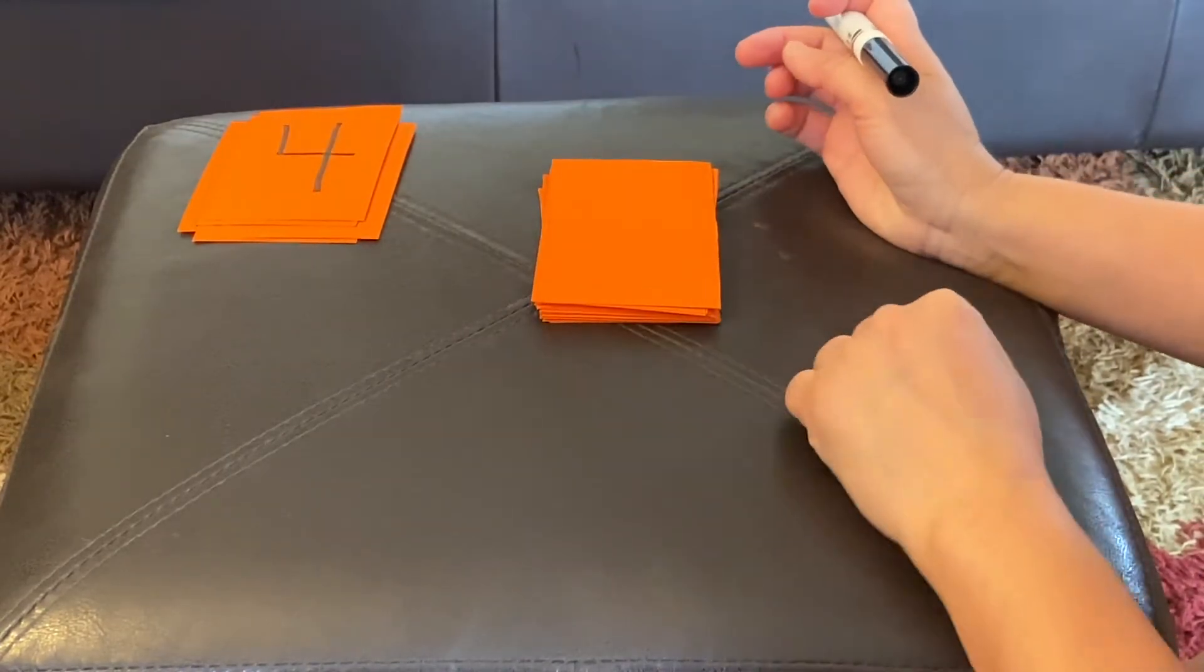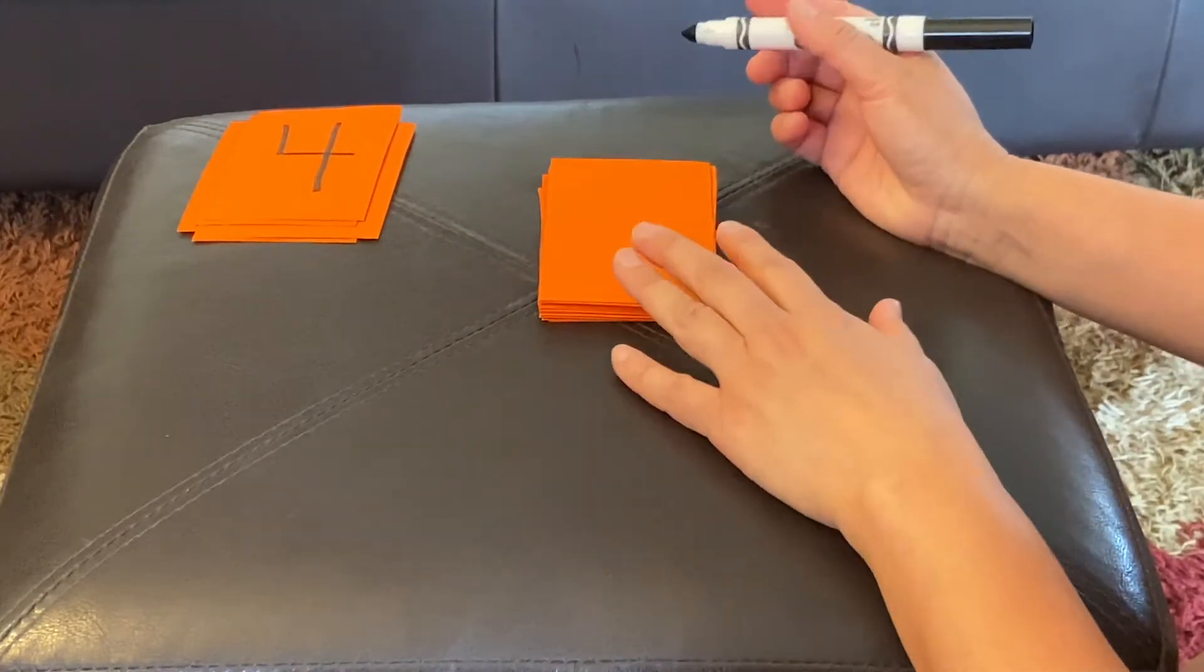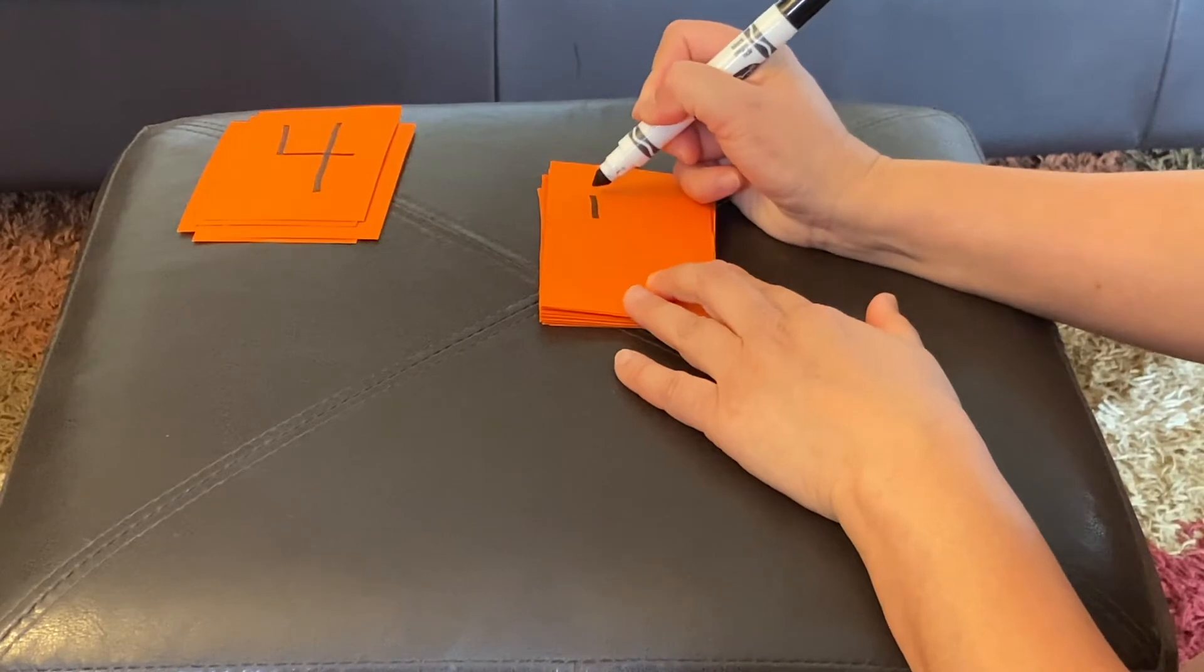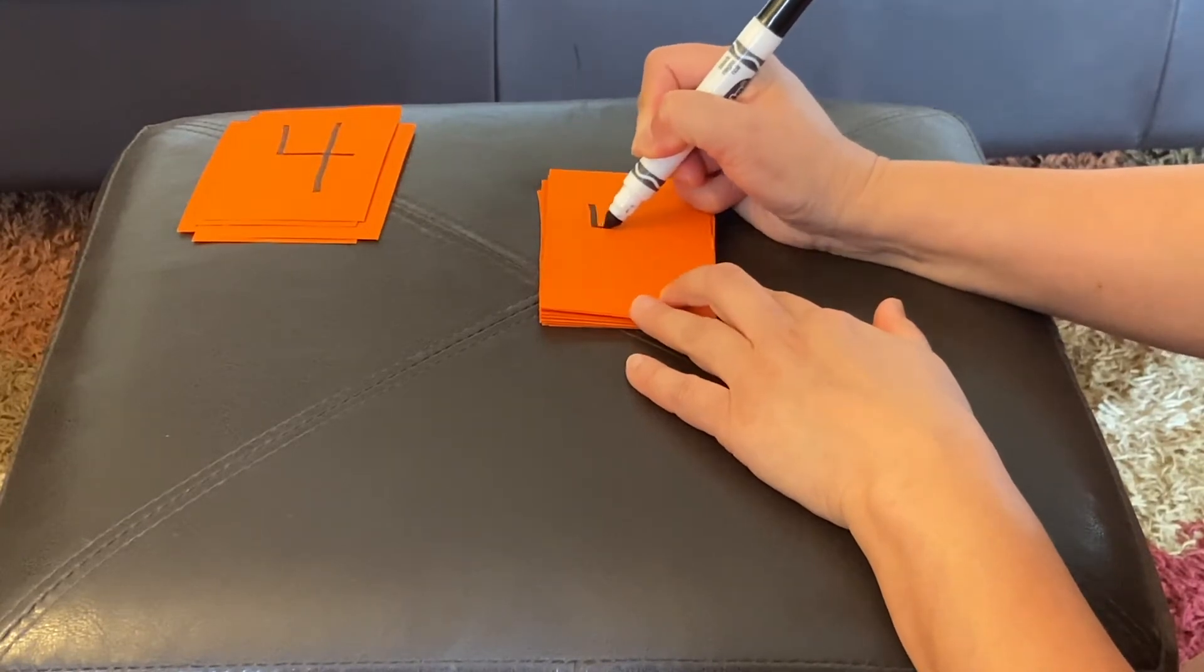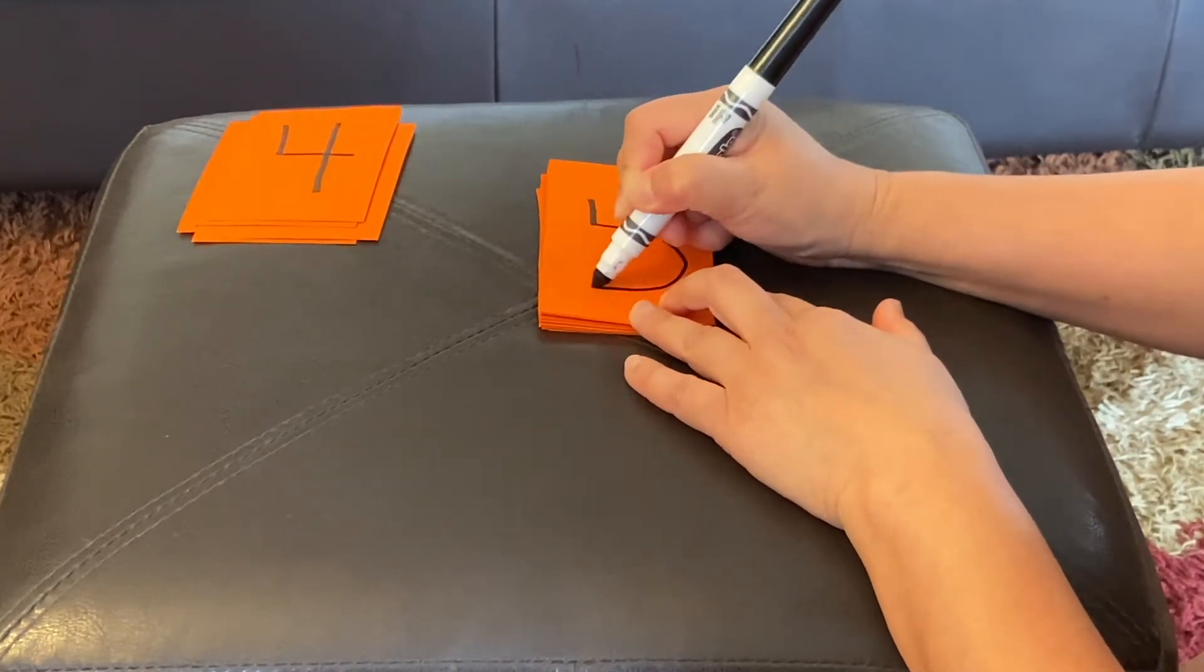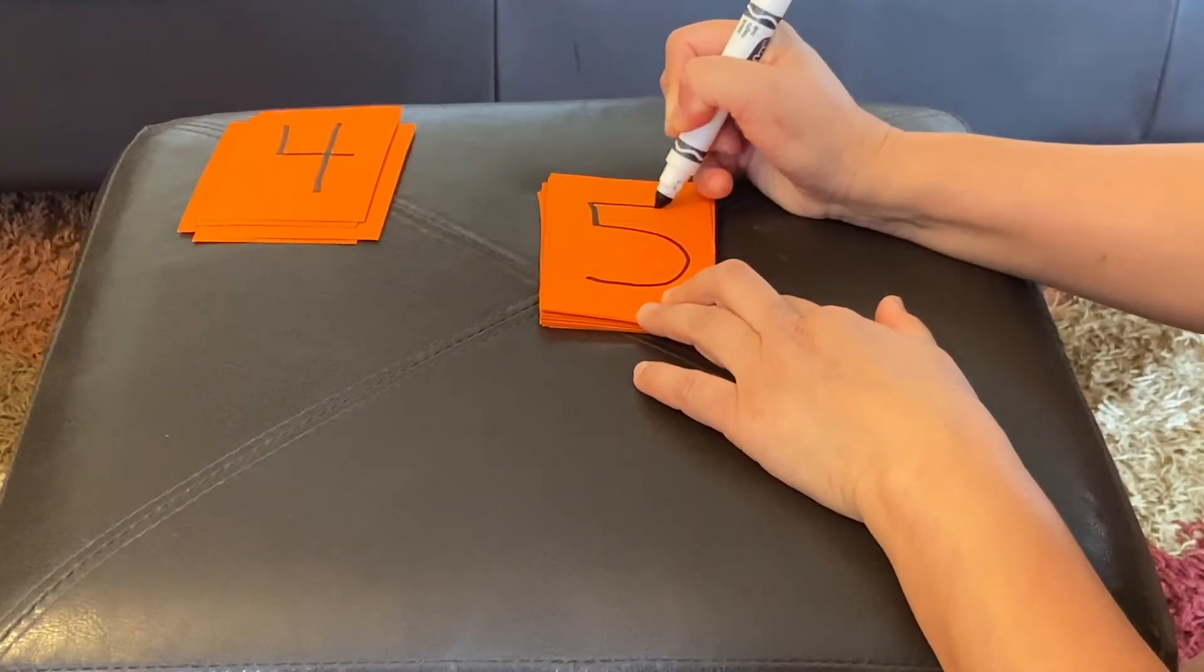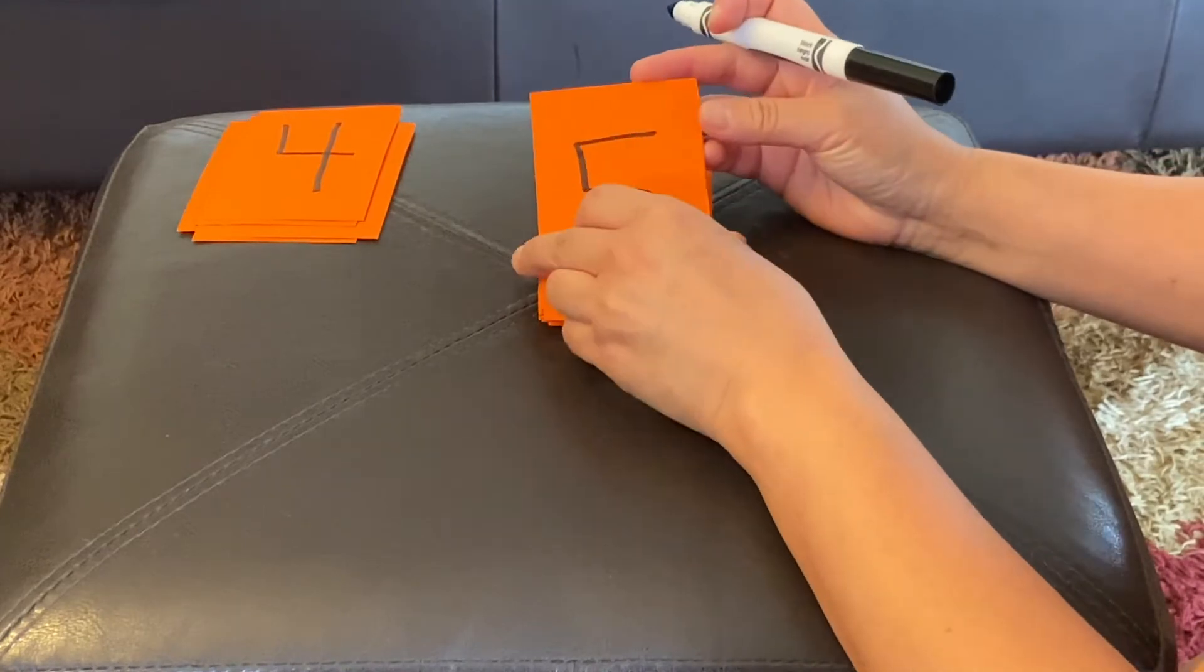Five. There are lots of ways to make five. I like to make it this way. First, a short line down. And then we're going to make a big belly to the back, a curve to the back, and I'm going to give it a hat at the top. There's my five.